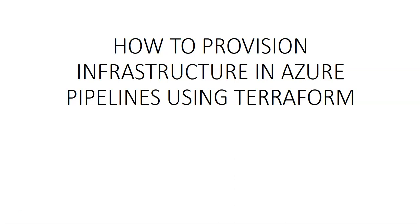In the coming videos we'll see what we exactly mean by infrastructure as a code and configuration as a code. There is a difference between infrastructure as a code and configuration as a code. I'll try to use some of the popular tools for automation of deployment. We will build and apply a Terraform plan that will automatically provision an Azure App Service in Azure Pipelines.